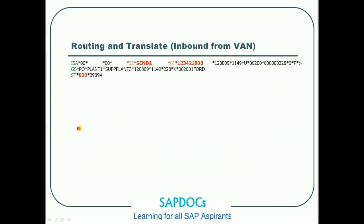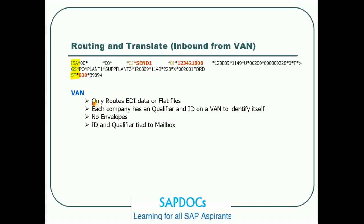Taking a similar example as before: we have an EDI file coming in with the ISA, GS, and ST envelope segments, with sender and receiver identified. VAN only routes EDI data or flat files. Note that flat file routing in a VAN may be a custom process — not all VANs support flat file processing, and if they do, they must develop a custom process depending on your flat file layout.